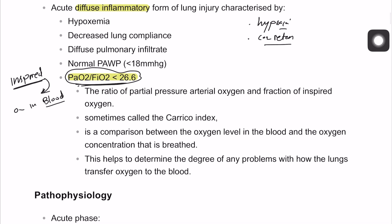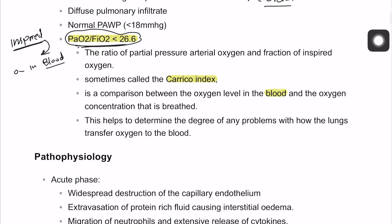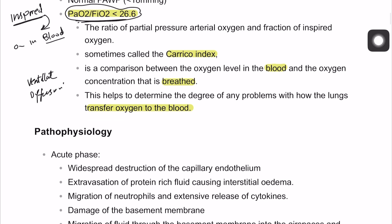Sometimes we call this the Carrico index as well. It is a comparison between the oxygen level in blood and the oxygen level that was inspired or breathed in. This determines the degree of any problem with how the lung transfers oxygen to the blood — essentially testing diffusion of the lung. The pathophysiology is quite complex, but we will summarize it in a few points.